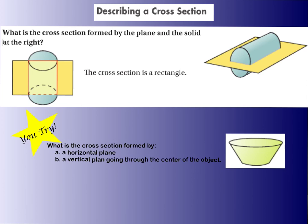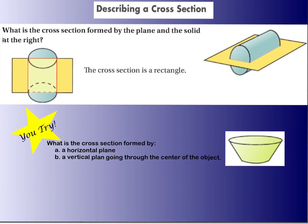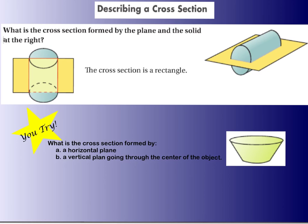Let's describe a cross-section and determine what shape is created. The question is: what is the cross-section formed by the plane and the solid at the right? Here's the plane cutting through the solid, and you have to imagine what shape is created. The cross-section here is a rectangle — when drawn out it's pretty clearly seen, though it's not easy to imagine at first. You try: what is the cross-section formed by a horizontal plane cutting this way? And what about a vertical plane going through the center?